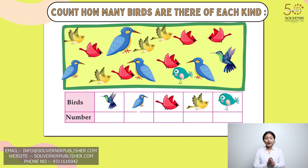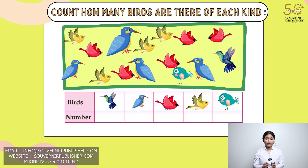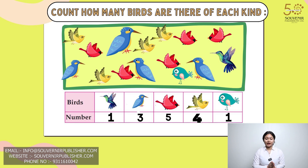Now you have to count how many birds there are of each kind. Firstly, we have a hummingbird. In the box you have to count how many hummingbirds there are — there is one hummingbird. Now let's try to find how many woodpeckers there are. Correct — there are three woodpeckers.